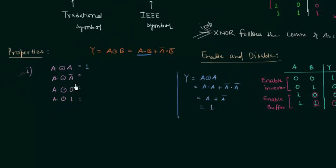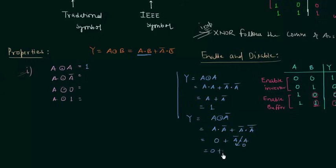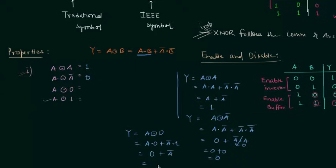For A XNOR A': we get A·A' + A'·A = 0 + 0 = 0. So A XNOR A' = 0. For A XNOR 0: A·0 + A'·1 = 0 + A' = A'. So A XNOR 0 = A'. And A XNOR 1 = A. This is the first property.